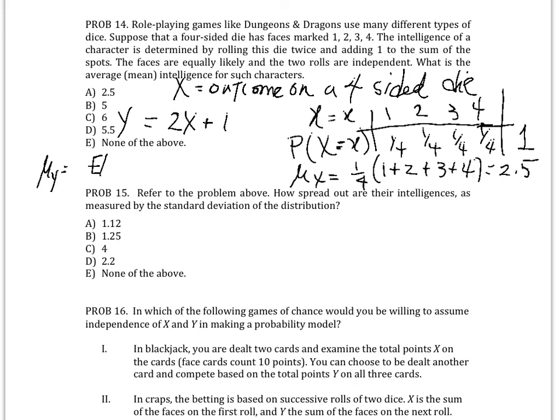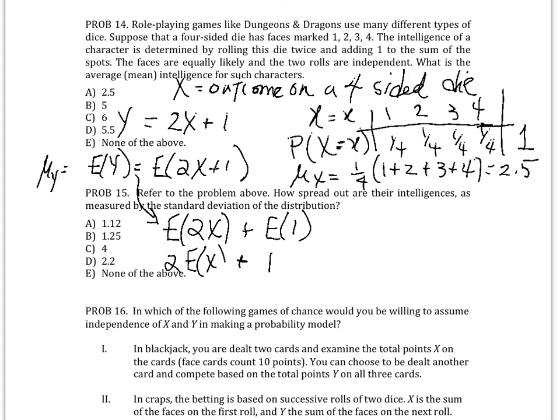It would be the expected value of y, using the rules for linear transformation. Then that would just be the expected value of 2x plus 1, which would be the expected value of 2x plus the expected value of 1. Well, this is just a constant, so this just becomes 1, and this becomes 2 times the expected value of x. So using our rules, then this is just 2 times 2.5 plus 1, which becomes 5 plus 1, which is 6, and the answer is C.